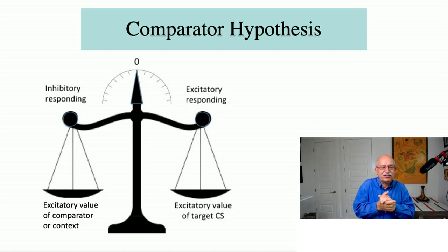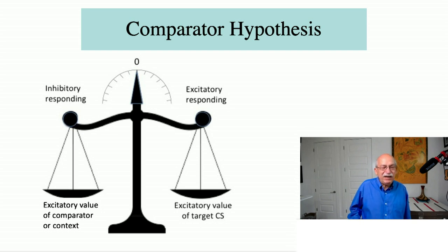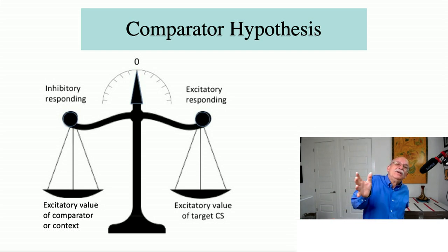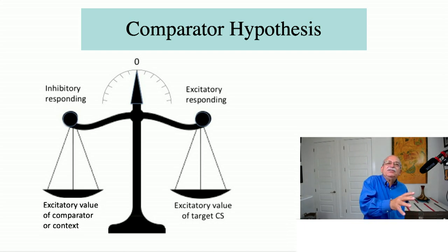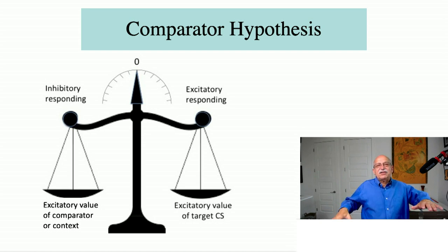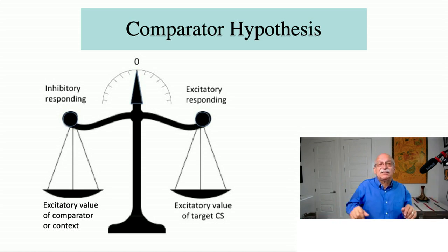The term is 'comparator hypothesis' — you're comparing two things, hence the scale with a balance with something on each side. What are you comparing? You're comparing the excitatory value of the target CS, illustrated on the right side of the balance, with the excitatory value of the contextual cues or other stimuli that were present when the target was trained — the comparator stimulus. Whether you get excitatory or inhibitory responding depends on which side of the balance is stronger.